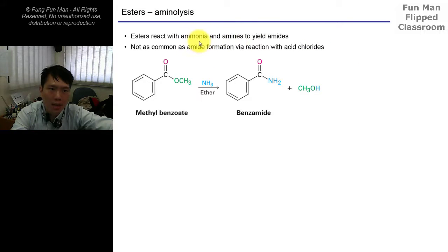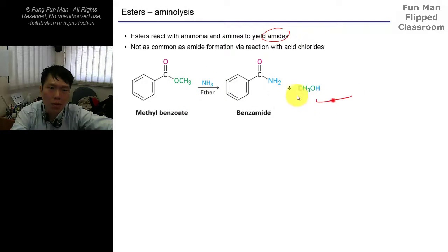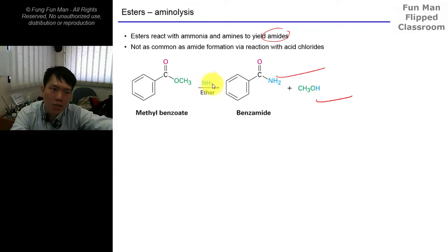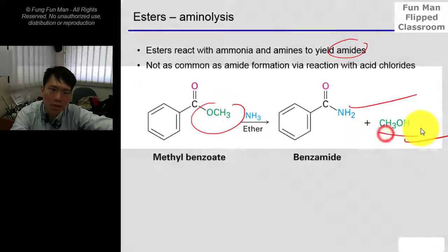Esters react with amines and ammonia to give amides. This is because amines are better nucleophiles than OH or OR. So you throw in some ammonia - it will kick out the OCH3 to get the alcohol, and the H from there goes with this part to form the amide. Follow the color scheme in the diagram.